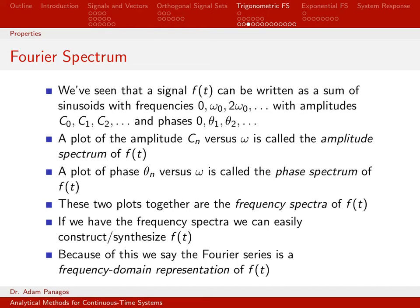When we're all done representing a signal with its Fourier series representation, we have this set of amplitudes C and this set of phases theta. One way to represent this information graphically is through plotting the spectrum of the signal. When we plot the amplitudes, the CNs versus omega, that is what we call the amplitude spectrum of f of T.